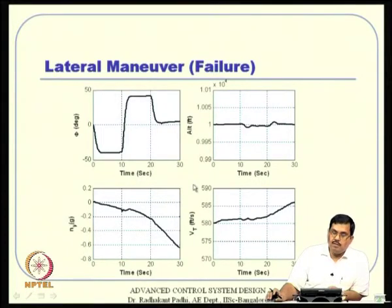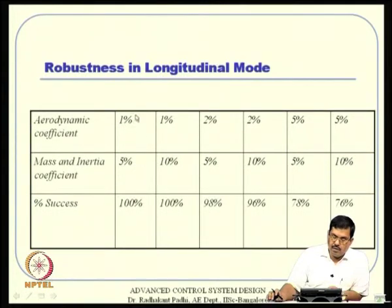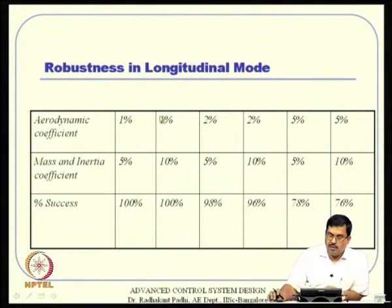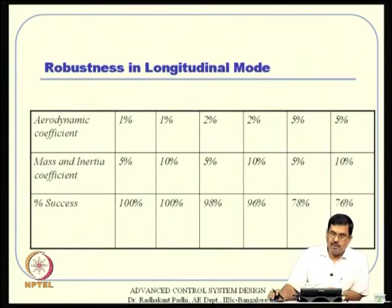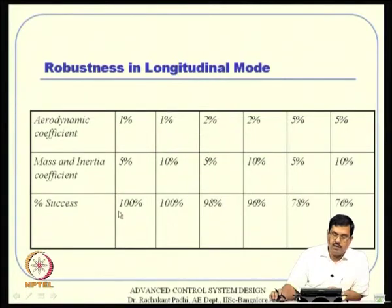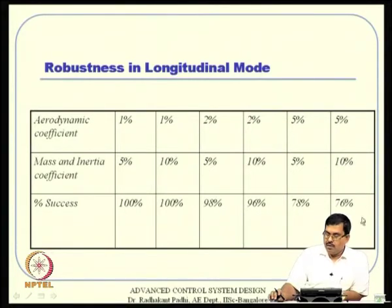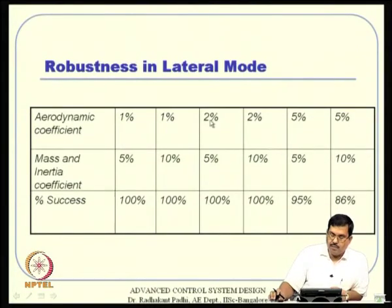Monte Carlo simulation studies are conducted with various combinations of aerodynamic coefficient and inertia perturbations: 1%+5%, 1%+10%, 2%+5%, 2%+10%, 5%+5%, etc. For each combination, approximately 50–100 random cases are run and success/failure rates recorded. Results show that at 5% aerodynamic and 10% inertia perturbation, the nominal controller success rate drops to about 75%, and at larger inaccuracies success falls near 0%.